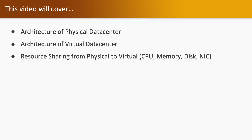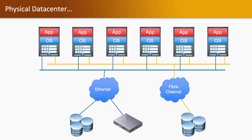If we talk about the physical data center, we have multiple physical servers running, and operating systems and applications are running on top of those physical servers. Those servers are further attached with Ethernet switches and Fibre Channel switches. Ethernet switches are further extended to L2 switches and L3 switches, and also attached with IP-based storage. Whereas Fibre Channel is used for providing storage, which is further attached with FC storage and FCoE storage.